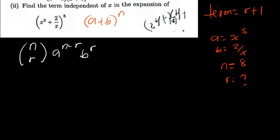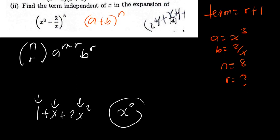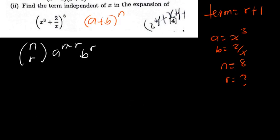The basic idea: take 1 + x + 2x². The first term is independent of x — that is the same as 1 times x to the power 0, and any number to the power 0 is 1. So x to the power 0 is the term we are looking for. Let us go ahead and find r. When we find r, we come back and look at the term independent of x using the formula.